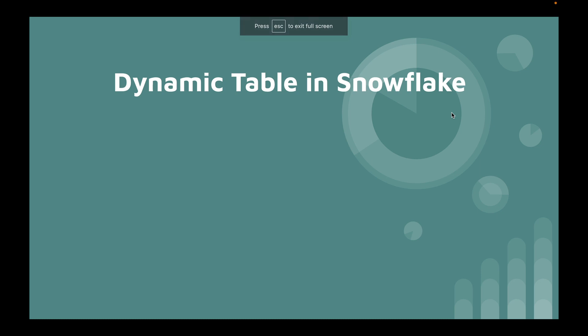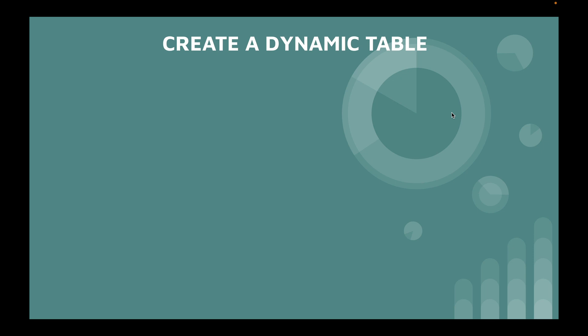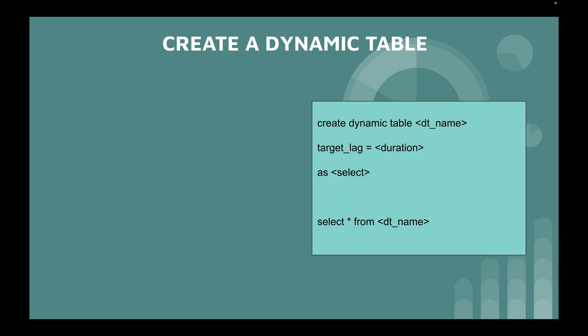In this session we will understand what exactly dynamic tables are in Snowflake. A dynamic table is created with the command CREATE DYNAMIC TABLE, where you give the table name and a TARGET_LAG parameter specifying the refresh duration, followed by your query. Unlike materialized views, which had certain query limitations, dynamic tables support any query including transformations, joins, and filter conditions.